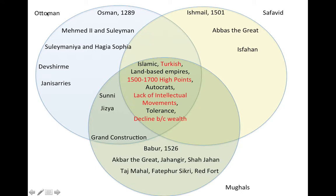The Ottomans and the Mughals were Sunni Muslims who practiced the jizya — taxing non-believers. If you were a non-Muslim, you weren't persecuted; there was tolerance, but you had to pay a tax. That said, leaders like Aurangzeb among the Mughals and certain Ottoman leaders were not as tolerant as others. The very concept of the Devshirme shows the Ottomans were not always the most tolerant — there's always something to complicate the picture.